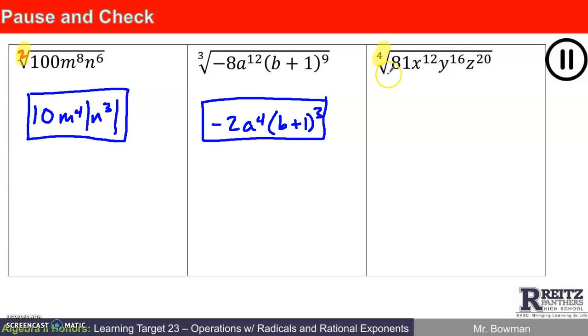There we have it. Last one. We want the 4th root of 81, x to the 12th, y to the 16th, z to the 20th. What could I raise to the 4th power to get 81? 3.